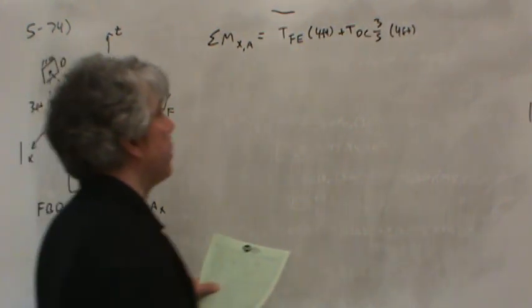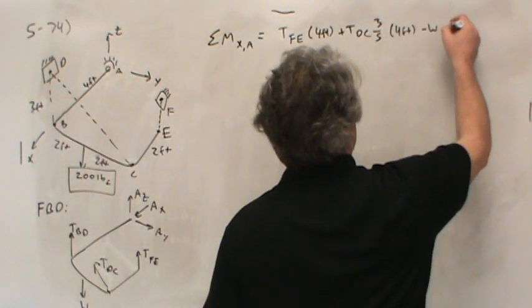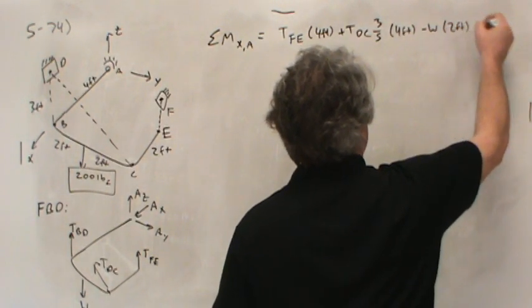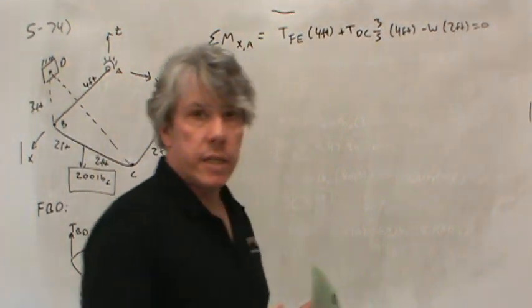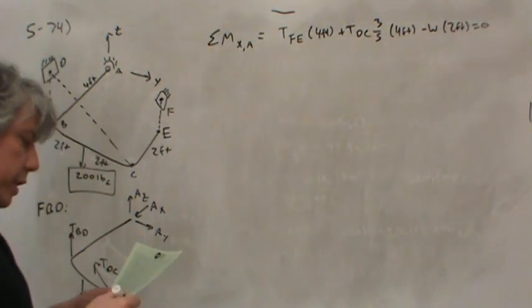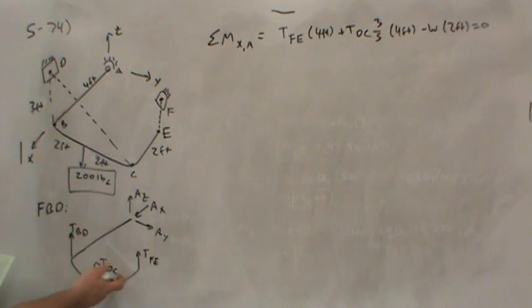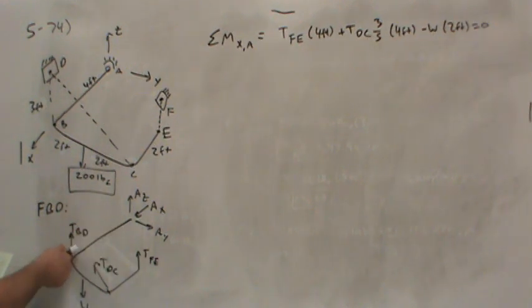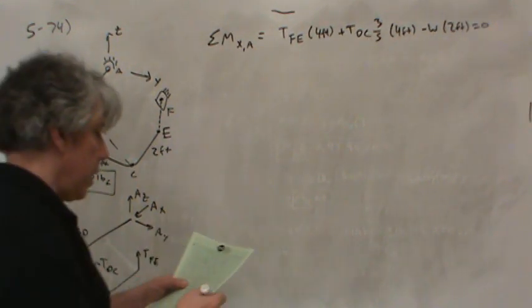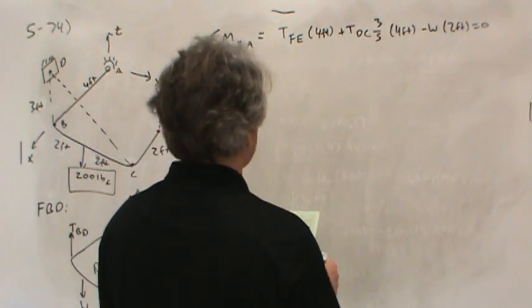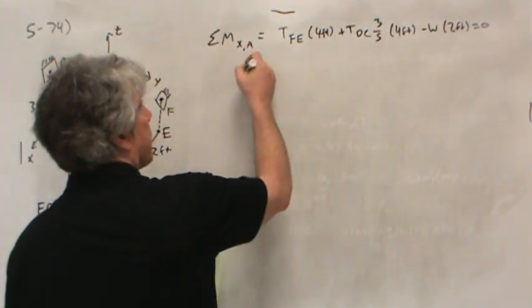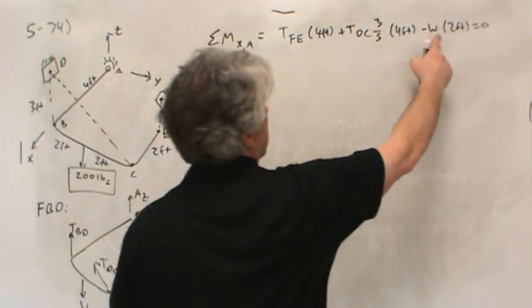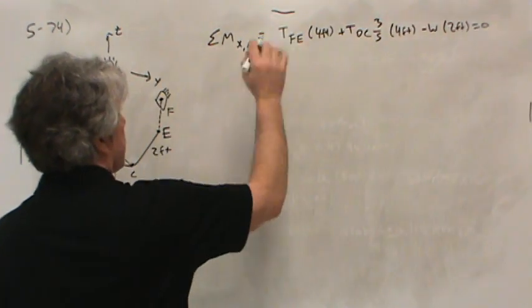And then the weight W causes a negative moment about the X axis, but it only has a two-foot moment arm, so minus W times two foot. But I realize we know what that weight is, it's 200 pounds, but I just put it in this way to begin. That's it. Those are the only three things that cause a moment about the X axis. So let's simplify this down just a little bit. I'm going to drop the units. Obviously if I put in pounds here, the units are consistent. So I'll just drop the units.